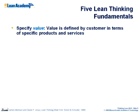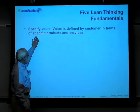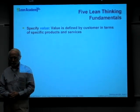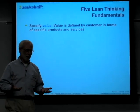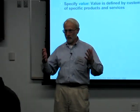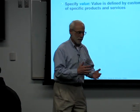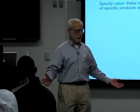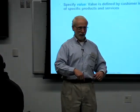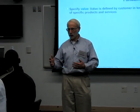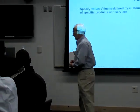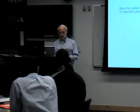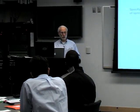Now we'll move to the five fundamental principles of lean thinking, articulated in the book by Jim Womack and Dan Jones. The first is to understand what value is — value is defined by the customer in terms of specific products and services. For engineers, this is very hard to think about because there are no units that go with it. Each of us makes value decisions every day — you made a value decision to come take this course.